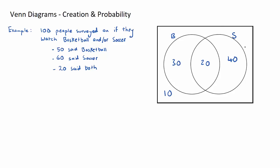So there we go, we have created our Venn diagram. This here visually shows the results of the survey. You can very quickly say, well, 10 people didn't watch any, 40 just watch soccer, 20 watch both, 30 just watch basketball. So that's the creation. Now I'm going to go through some of the common questions.